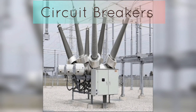A substation is an essential component of an electrical power system, which transforms high voltage transmission power into low voltage distribution power for homes and businesses. Within a substation, circuit breakers play a critical role in protecting the system from faults such as short circuits or overloads. A circuit breaker is a device that automatically interrupts an electric circuit to protect against damage from overloads or short circuits, detecting a fault and quickly opening the circuit. There are several types of circuit breakers, including air circuit breakers, oil circuit breakers, vacuum circuit breakers, and gas circuit breakers. The type used depends on the voltage level, current capacity, and specific requirements of the system.